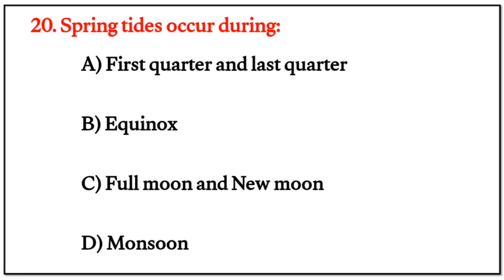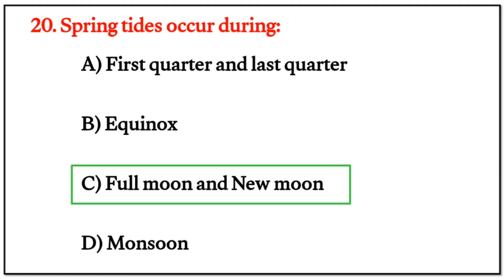MCQ Question 20: Spring tides occur during the — the right answer is C: full moon and new moon.